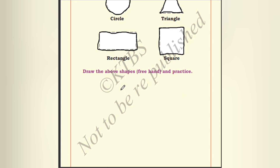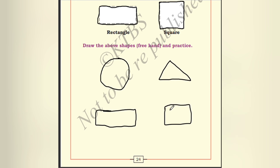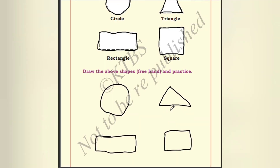Draw the above shapes freehand and practice. These pictures we have to draw here: the first figure is the circle, then the next figure is the triangle, then the rectangle, and the final one is the square. That's all about this chapter. If you are interested, please do like, share, and subscribe to my channel. Thank you.